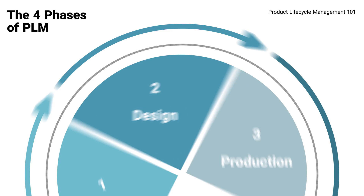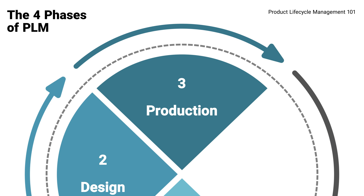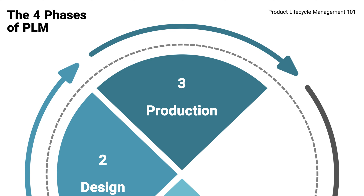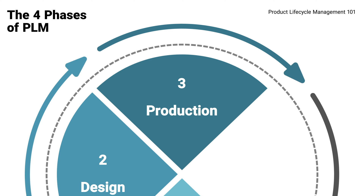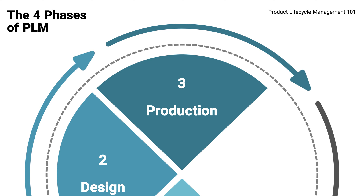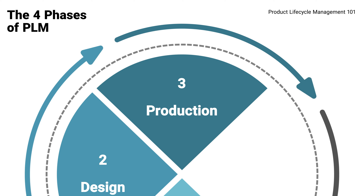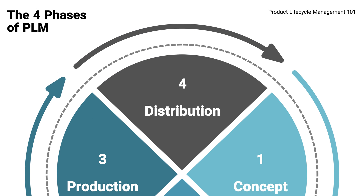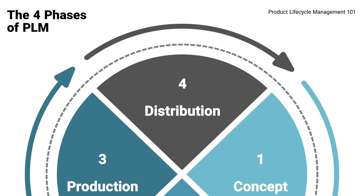The production phase, where product designs are manufactured at scale. This requires setting up manufacturing processes, sourcing materials, and optimizing product efficiency, all while maintaining quality standards. And finally, distribution, where products are shipped to retailers.